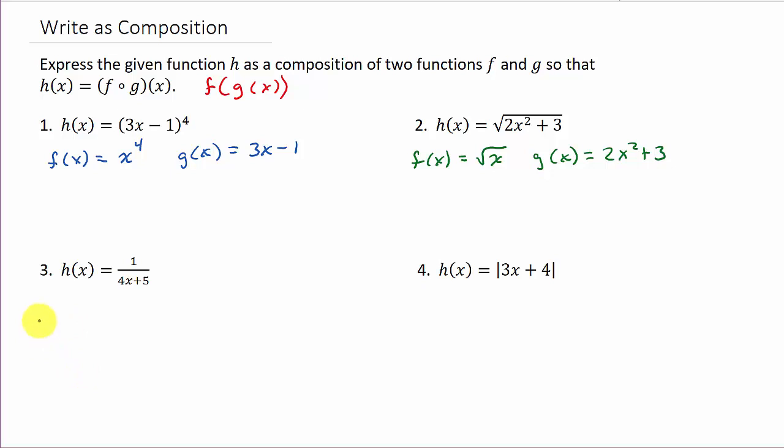So what about number 3? f of x can be 1 over x. So what would we need to replace x with to get the 4x plus 5? g of x would need to be 4x plus 5. And these are your two functions.